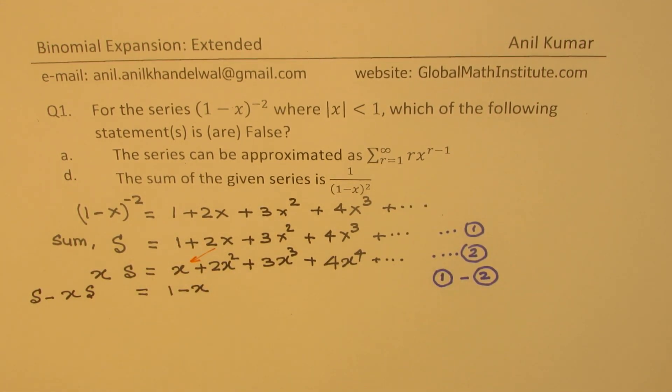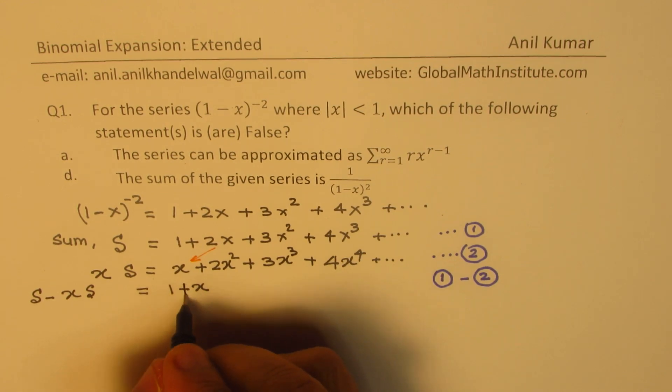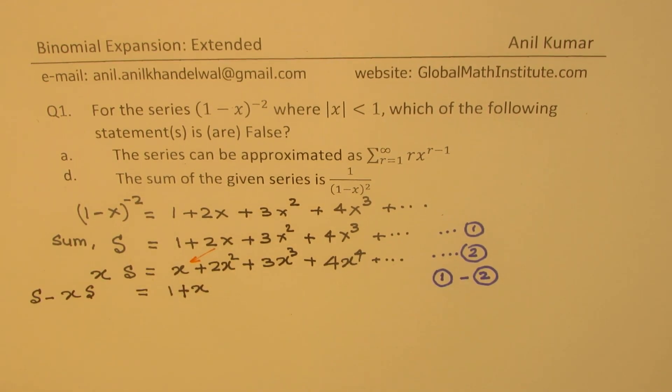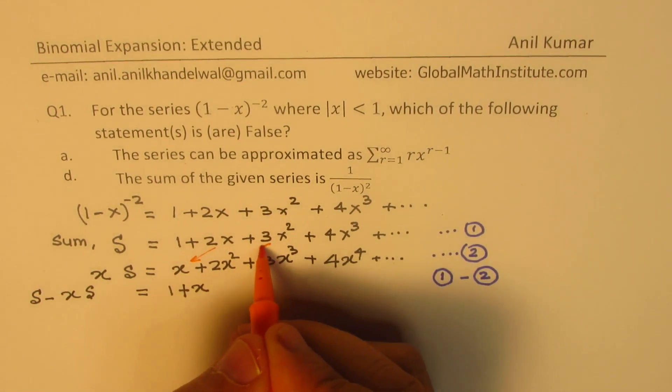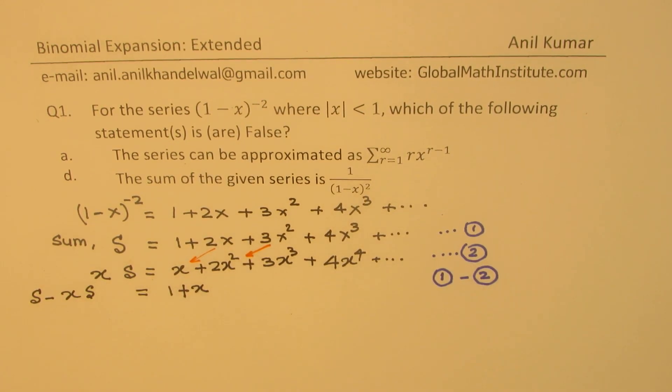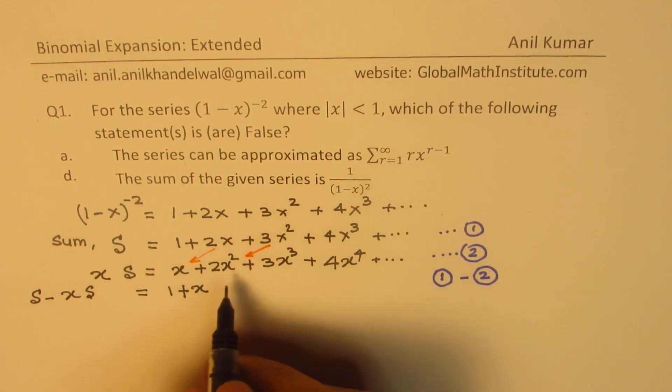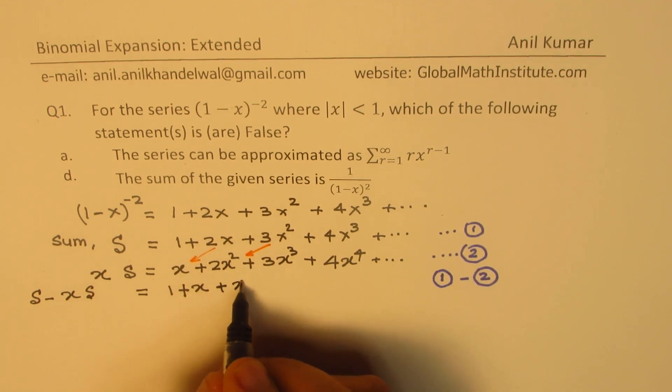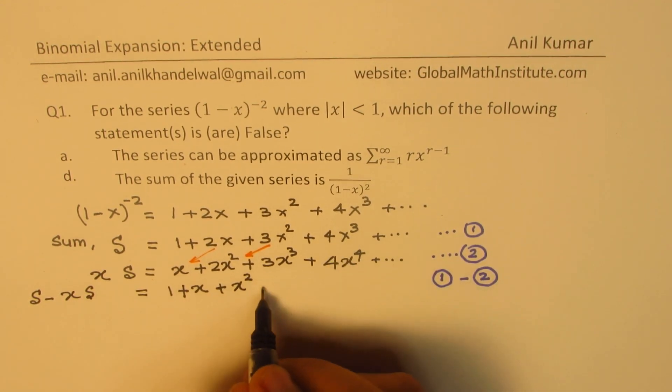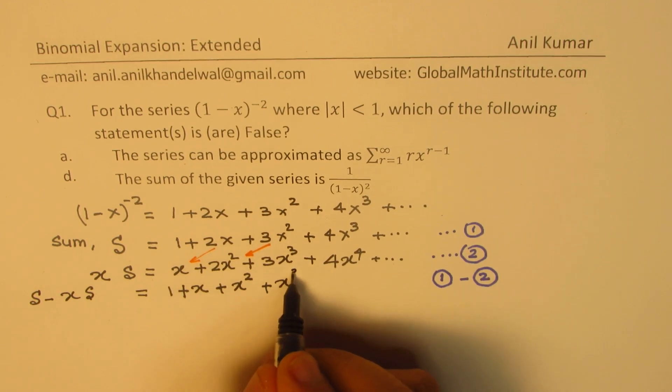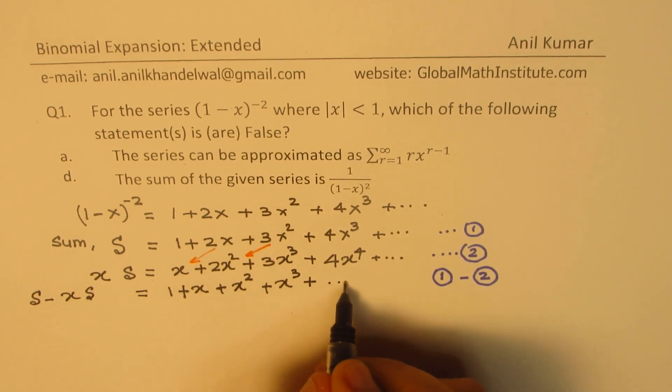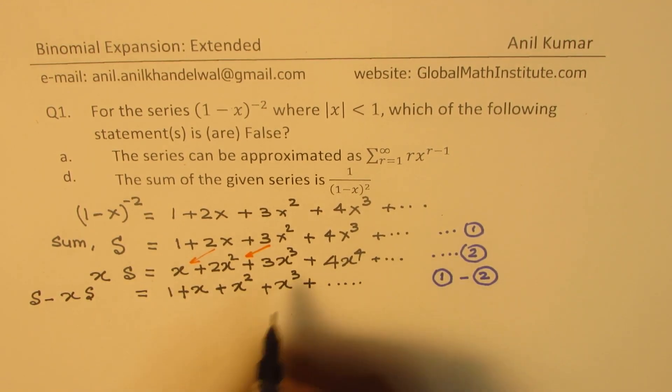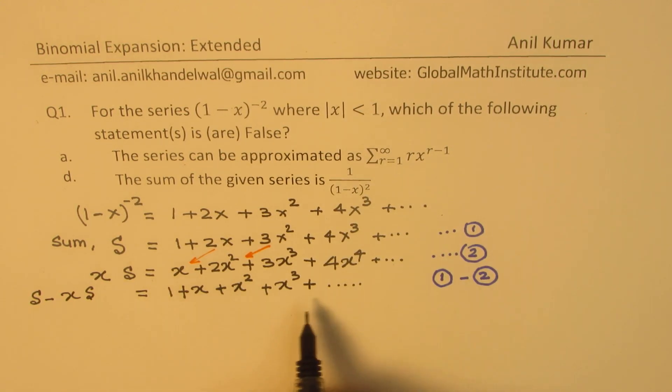When you do this, you get 2x - x is +x. And now, we'll do 3x² - 2x². You get 3-2 is 1, so you get x². Similarly, here we get x³ + and so on. So as you continue, you see it becomes a geometric series.